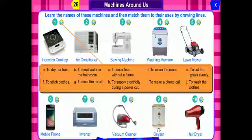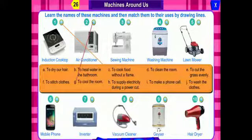Number 2, you can see air conditioner — in short we call it AC. Why do we use AC? To cool the room in hot summer days. Number 3 is sewing machine. Why do we use a sewing machine? To stitch clothes.